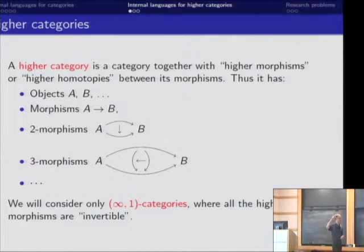Depending on how high your category is, they can go on forever. I'm going to be interested only today in (∞,1)-categories where all of these morphisms above level two are invertible. So they're all either isomorphisms or inverses or equivalences or whatever suitable notion that is. And it takes some work to formalize what you mean by a higher category, but I'm not going to worry about that. There are various different things you can do.